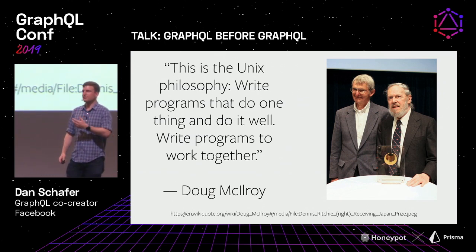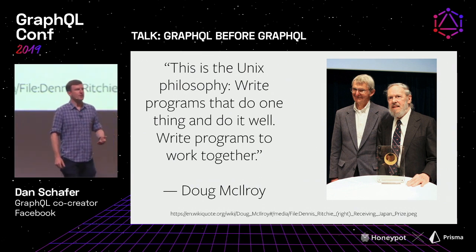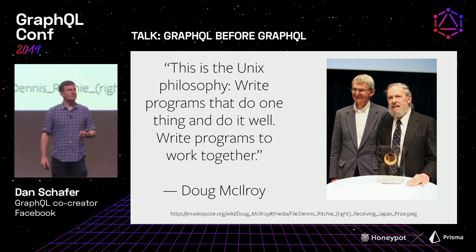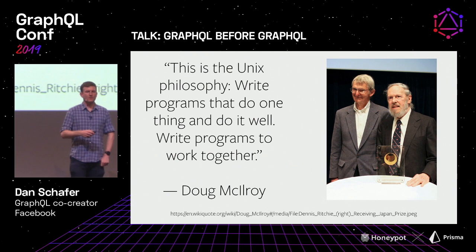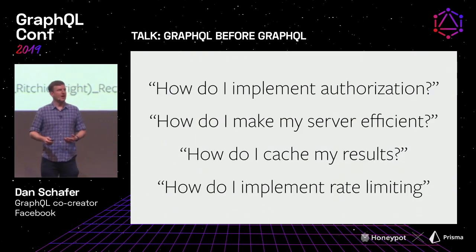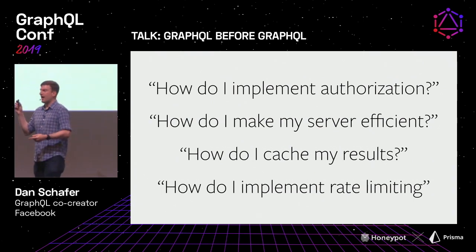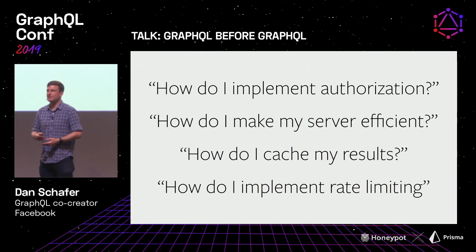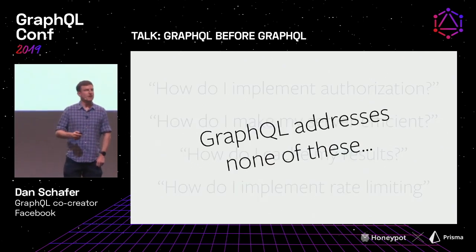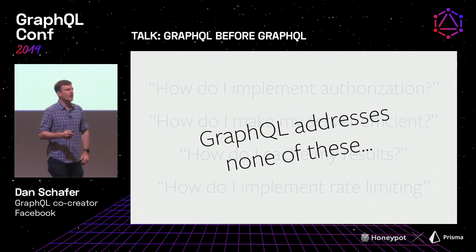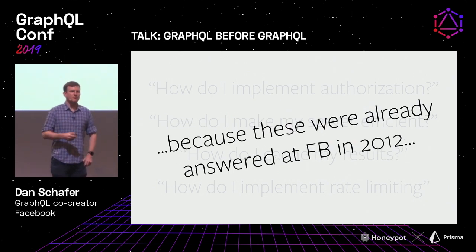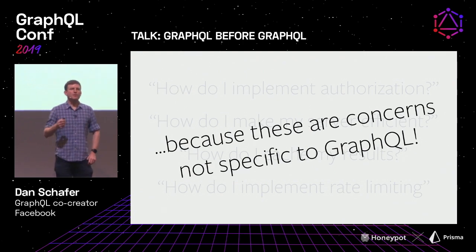I want to go back a little bit to philosophy. There's a quote from Doug McElroy — the Unix philosophy: write programs that do one thing and do it well, write programs to work together. When I think about how GraphQL operates and how the spec is designed, there are a lot of questions it very specifically does not answer — authorization, efficiency, caching, rate limiting — which are all really important questions. It doesn't ignore these; it just doesn't address them.